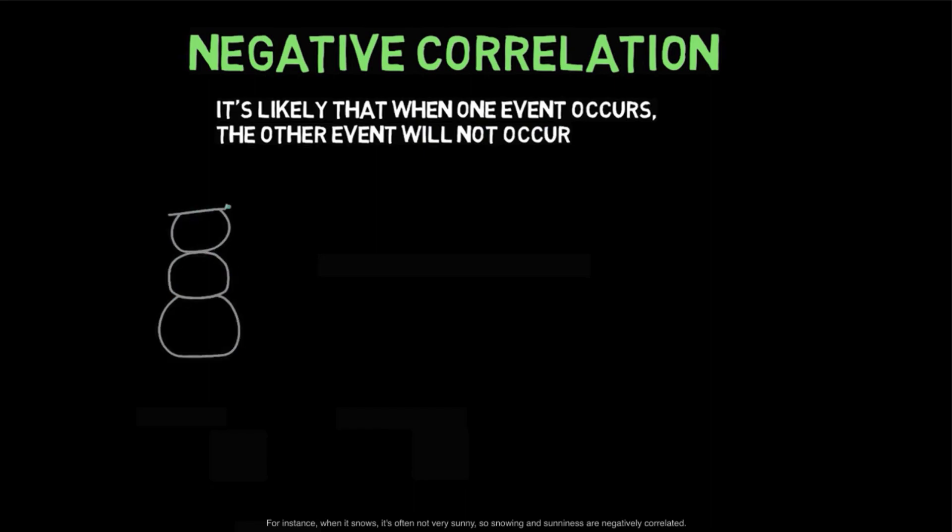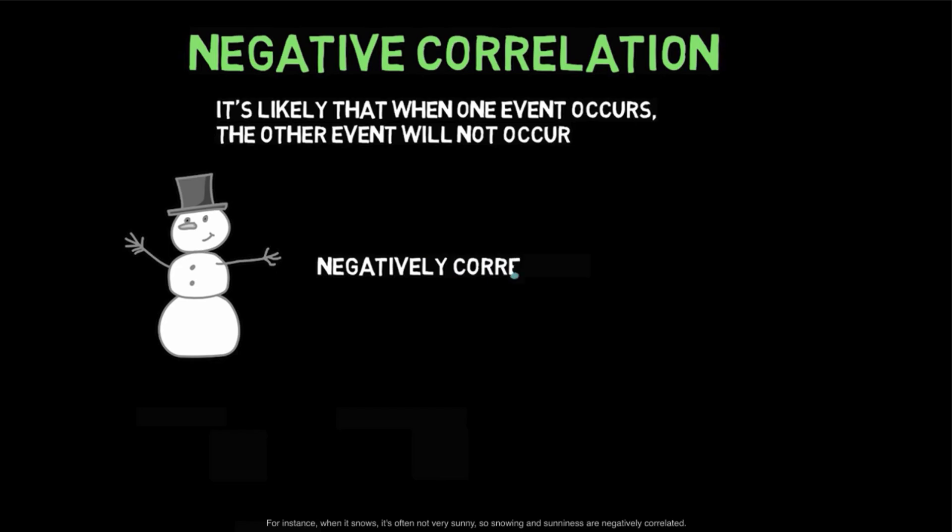On the other hand, two states are negatively correlated when it's likely that when one event occurs, the other will not occur. For instance, when it snows, it's often not very sunny. So, snowing and sunniness are negatively correlated.